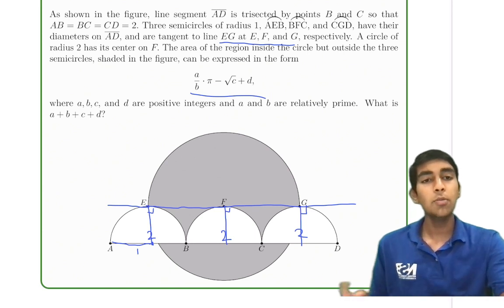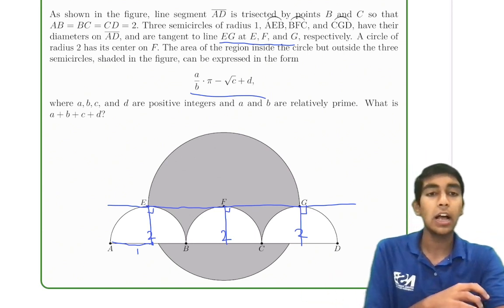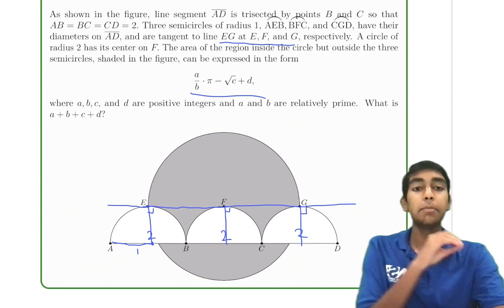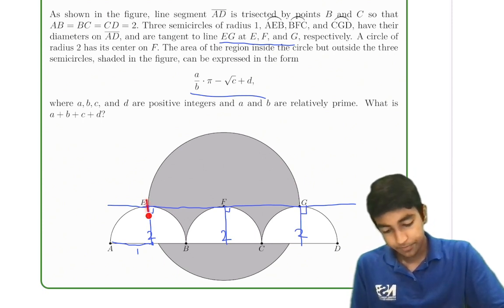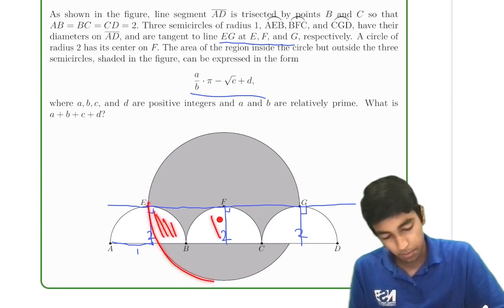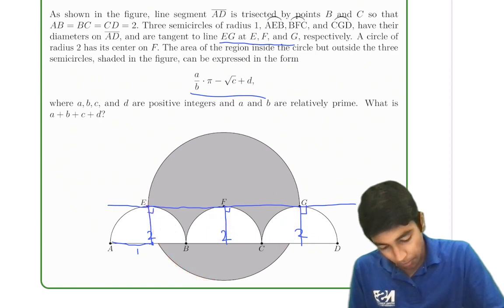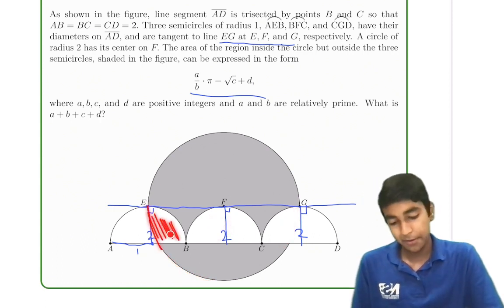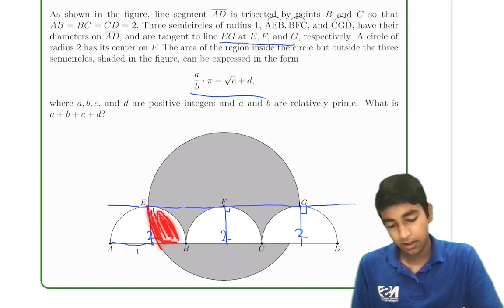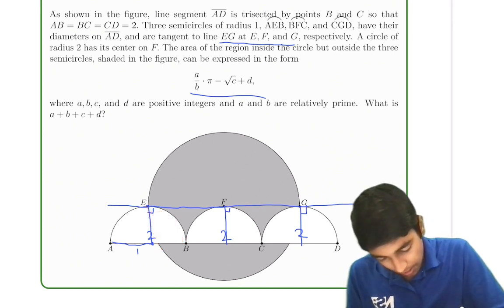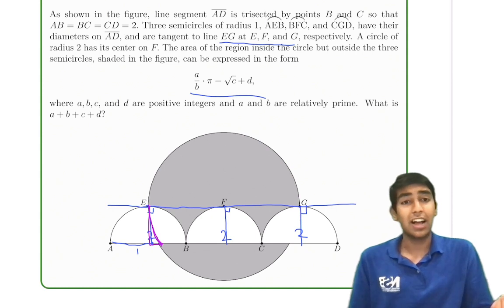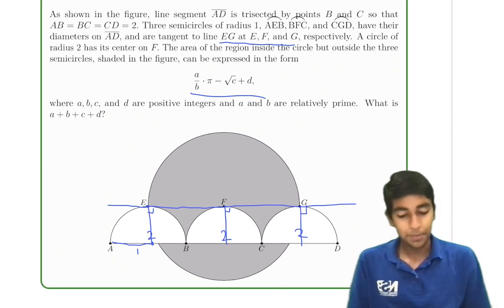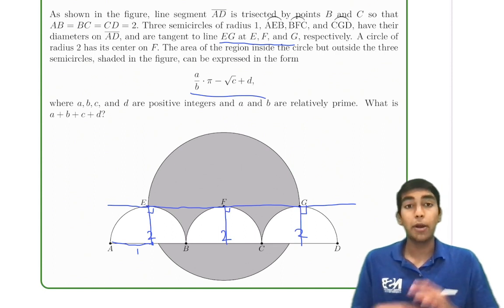For these types of problems there are two methods: one is to break the area into pieces, and the other is to find more than you need and subtract the extra. If you try to find the area of the large circle and subtract the extra parts, that extra region turns out to be a very strange shape that we can't easily calculate without calculus. So the better strategy is to break it into pieces.